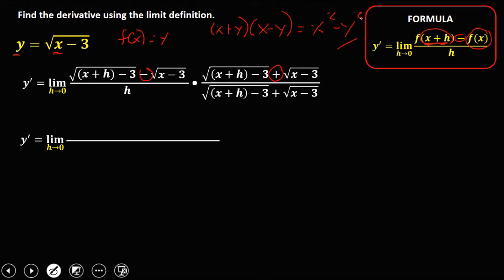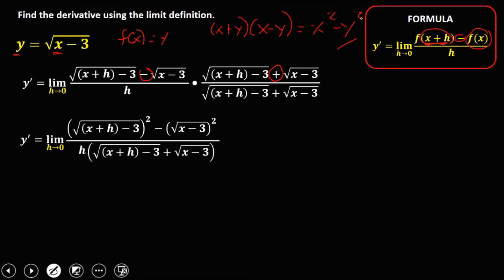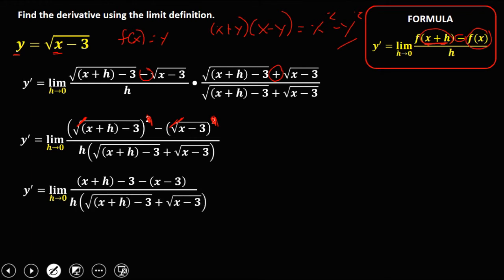So we have the square of the first term minus the square of the second term. For the denominator, you just copy it. Then simplify — we can cancel the radicals. So we have x plus h minus 3, then minus x minus 3. Over the denominator. We can omit the parentheses: x plus h minus 3, then distribute the negative to every term — negative x and positive 3.